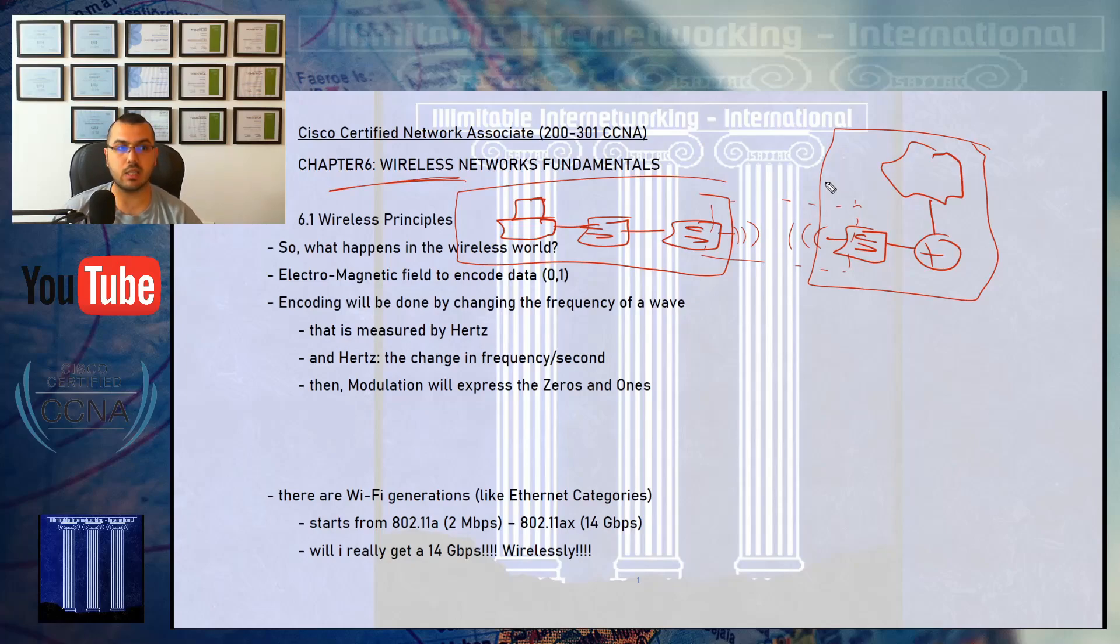This one will be connected to some source of device that will send some frequencies to this other one that will receive some frequencies. What will happen in this chapter will be a lot of details about everything that is happening just between these two. Wireless network is not establishing an entirely wireless network. Wireless network is having a solution for a small part in your network that cannot have cables extended.